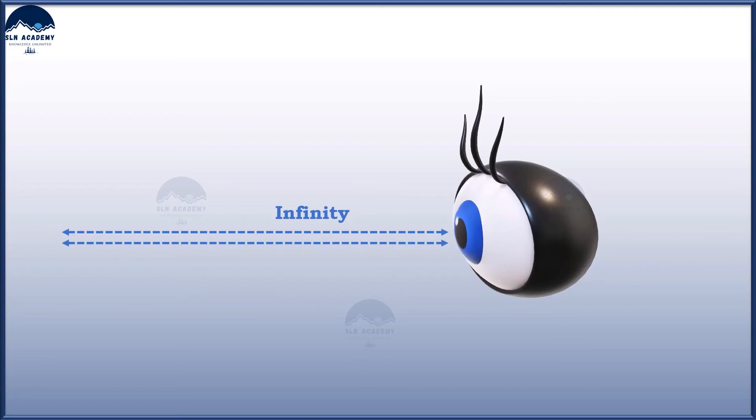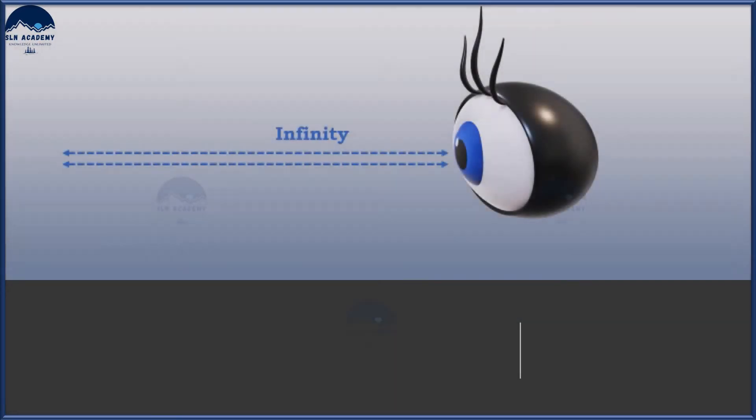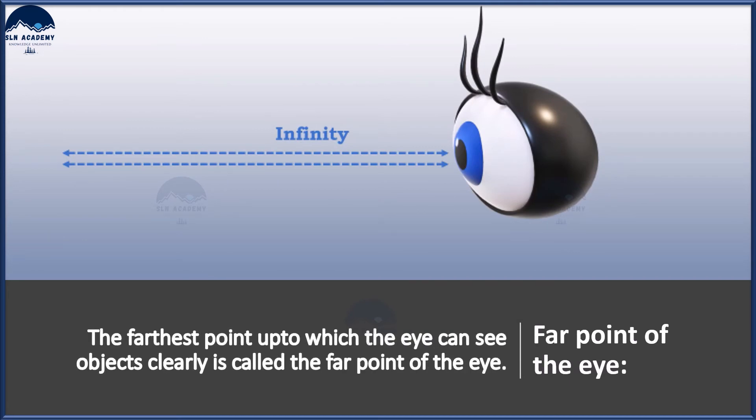The farthest point up to which the eye can see objects clearly is called the far point of the eye. It is infinity for a normal eye.